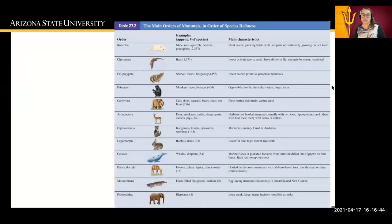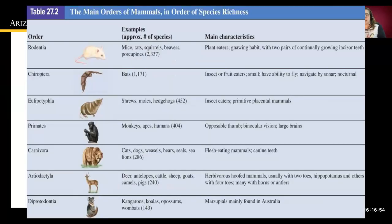You can see some of the main characteristics of organisms in the various orders of mammals. Rodentia includes rodents like mice, rats, beavers, and porcupines. They are typically plant eaters that gnaw, and they have gnawing incisor teeth that continually grow — if they did not gnaw on things, eventually their incisors would grow into their bottom jaw. Chiroptera are bats that eat insects and fruit, can fly, are nocturnal, and navigate by sonar. Eulipotyphla are shrews, moles, and hedgehogs that eat insects and are a more primitive placental mammal.